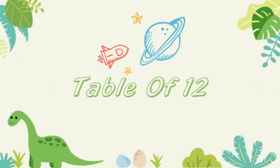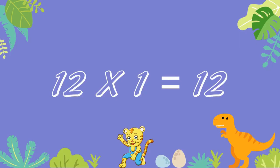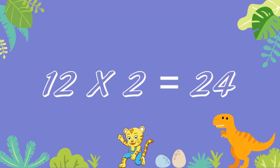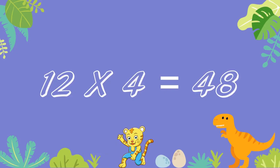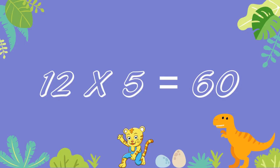Table of 12. 12 ones are 12. 12 twos are 24. 12 threes are 36. 12 fours are 48. 12 fives are 60.